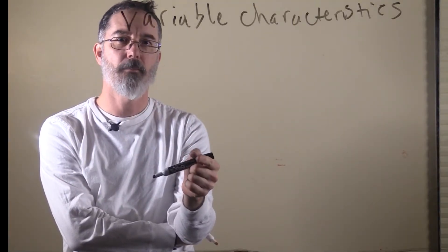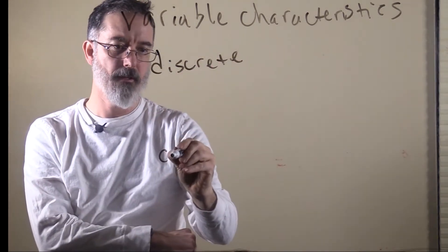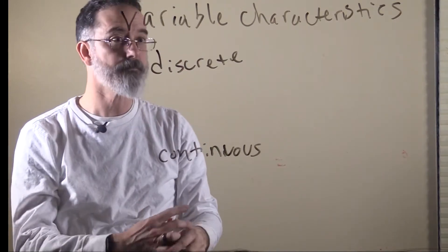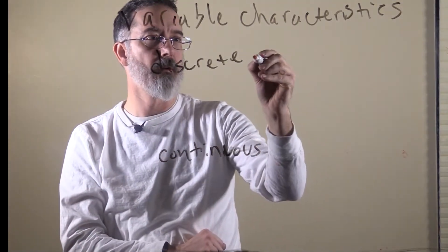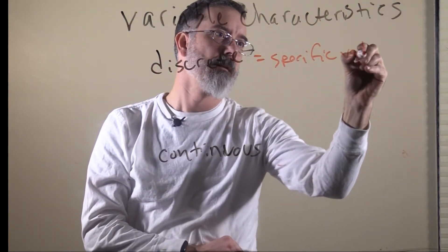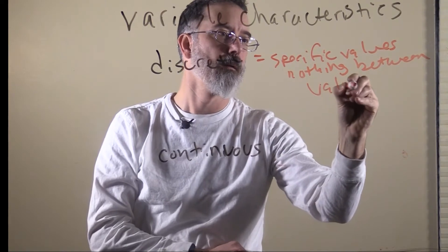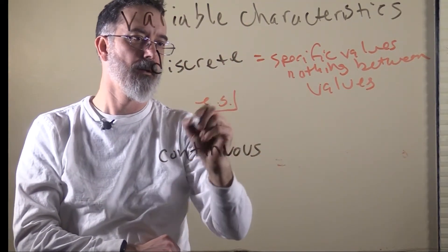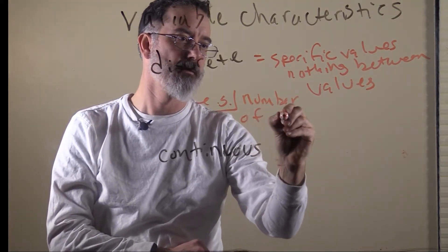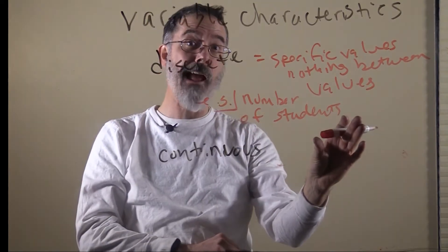The next variable characteristic I want to talk about is the distinction between discrete variables and continuous variables. Discrete variables have specific values with nothing between them. An example of this would be number of students — you can have zero students, one student, two students, or three students, but you can't have three and a half students.